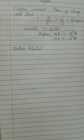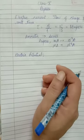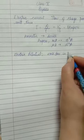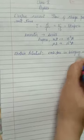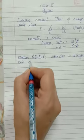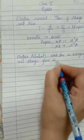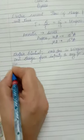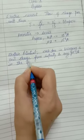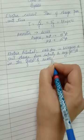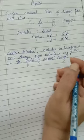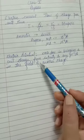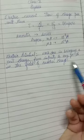Now we will discuss electric potential. Electric potential is defined as the work done in bringing a unit charge from infinity to any point A in the field of another charge. We can also say it is the work done per unit charge in bringing it from infinity to any point in the field of another charge.